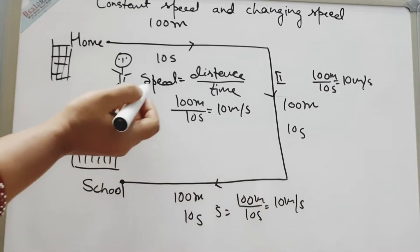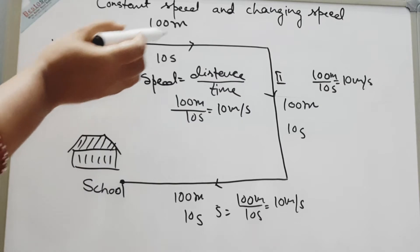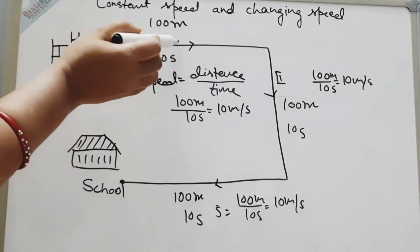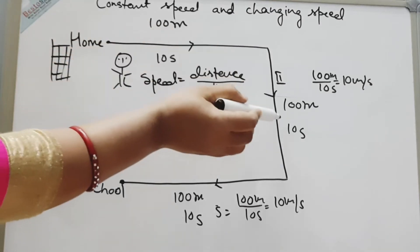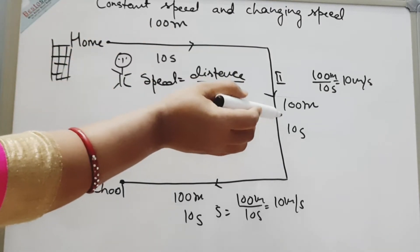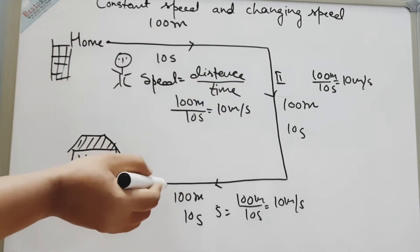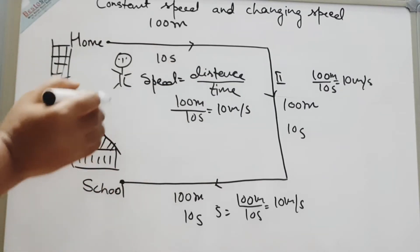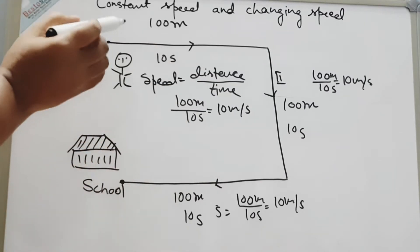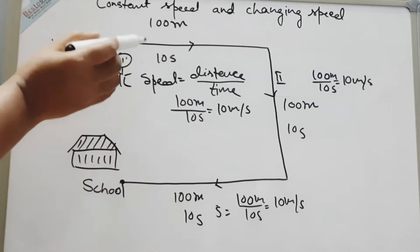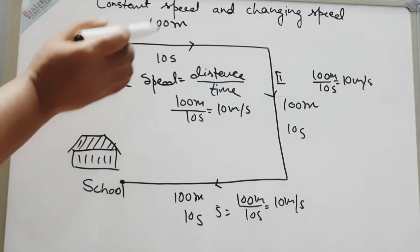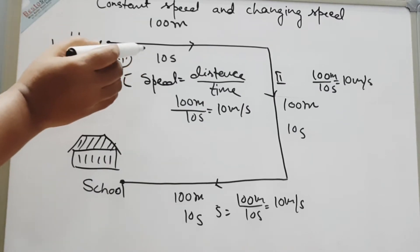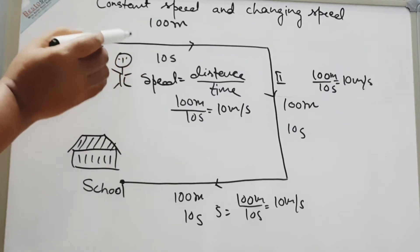So you can see that Sam has the same speed in the first section, same speed in the second section, and same in the third section. So this type of speed, when the same distance is covered in the same time, is called constant speed.